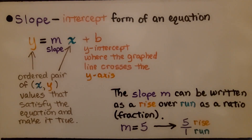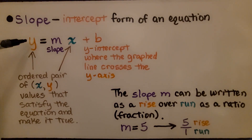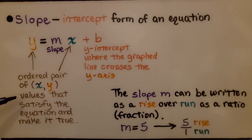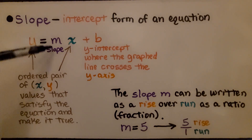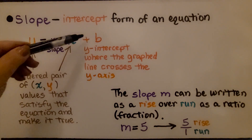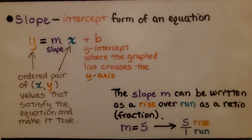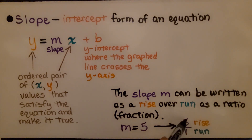To review: the slope-intercept form of an equation is y equals mx plus b, where x and y are the ordered pair values that satisfy the equation. We have m for slope — rise over run — and b for the y-intercept, where the graphed line crosses the y-axis. The slope m can be written as a fraction; for example, if m equals 5, we write it as 5 over 1 so we can graph the line.